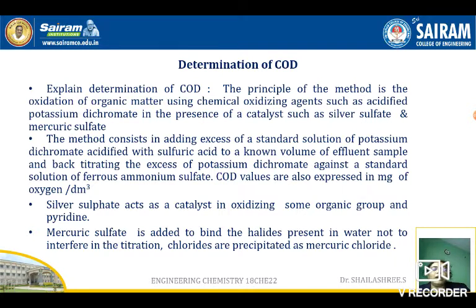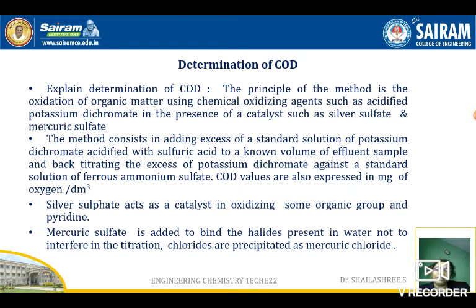Mercuric sulfate is added to bind the halides present in water. Water samples frequently contain chlorides, and if present they will interfere in the titration. To prevent this interference, mercuric sulfate is added — the chlorides present in water are bound as mercuric chloride. So we add excess potassium dichromate and then back titrate.